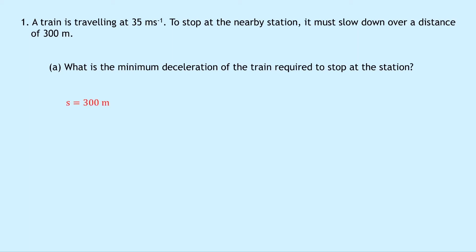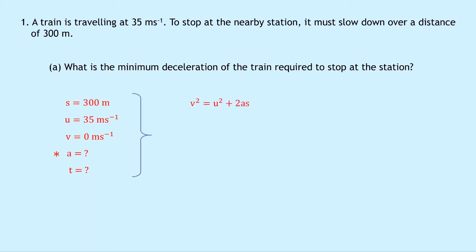Writing down what we know: S is equal to 300 metres, the initial speed U is 35 metres per second, we want the train to stop at the station so V equals 0 metres per second, we don't know what A is — that's what we're trying to find — and we don't know what time T is. Because we know S, U, V and we're trying to find A, and we don't know T, we're going to choose the equation of motion that doesn't have T in it, and that's V squared equals U squared plus 2AS.